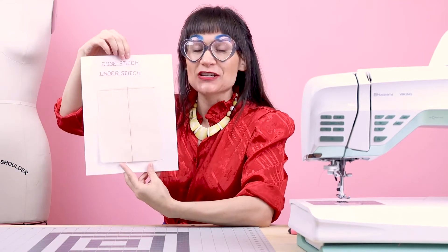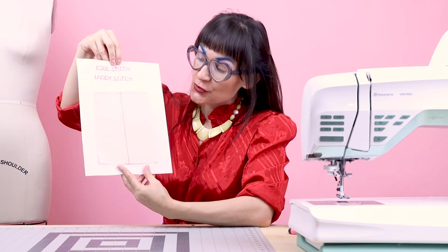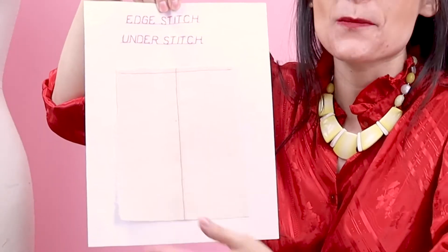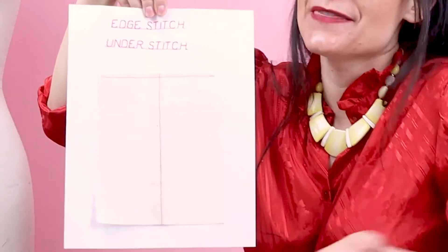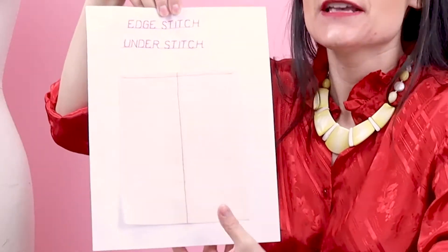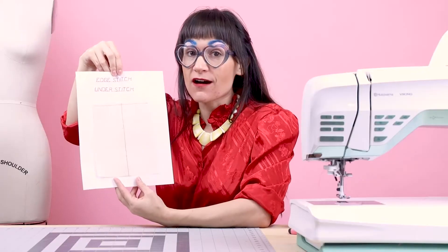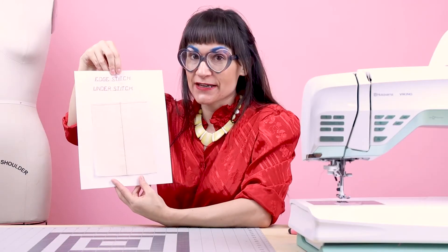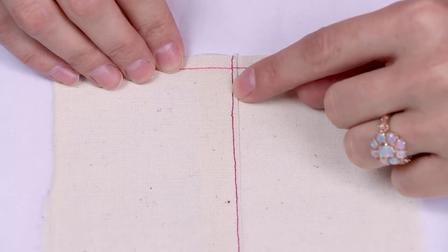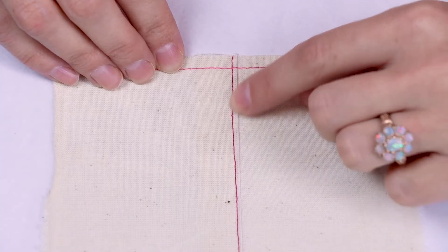Here's the edge stitch and understitch. You'll notice that there's a little stitch by the edge — this is why it's called an edge stitch. And when do we call it an understitch? Well, I'm going to tell you in a minute. So this here is an edge stitch understitch.